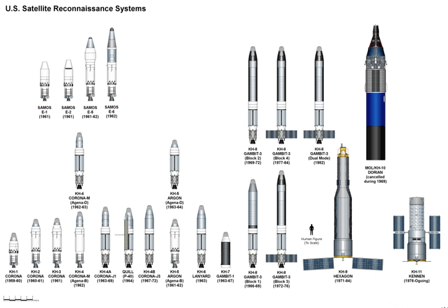A reconnaissance satellite, or intelligence satellite, commonly although unofficially referred to as a spy satellite, is an Earth observation satellite or communications satellite deployed for military or intelligence applications. The first-generation type Zenit took photographs, then ejected canisters of photographic film which would descend to Earth. Corona capsules were retrieved mid-air as they floated down on parachutes. Later, spacecraft had digital imaging systems and downloaded the images via encrypted radio links.